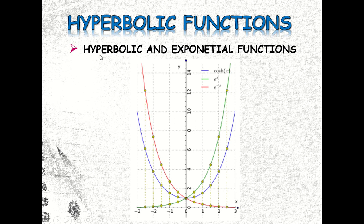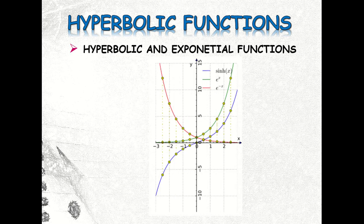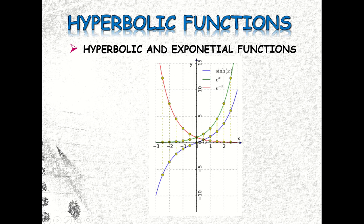For the hyperbolic sine function, the blue is sinh(x), the green is e^x, and the pink is e^(-x). The upper part of the graph above the x-axis: this is e^x. Comparing the green and blue, they take the same form. The blue curve below the x-axis takes the form of e^(-x). Subtracting e^(-x) from e^x and dividing by two gives the hyperbolic sine function.